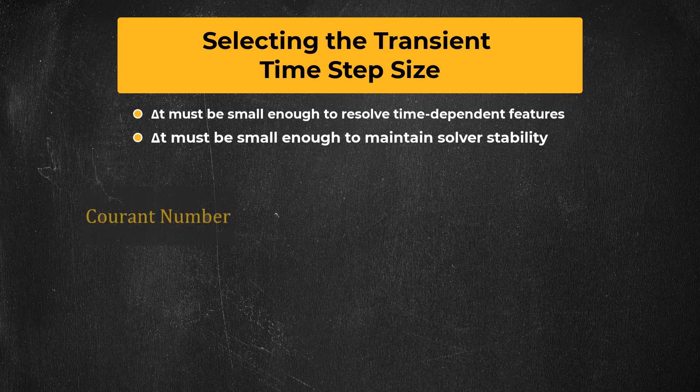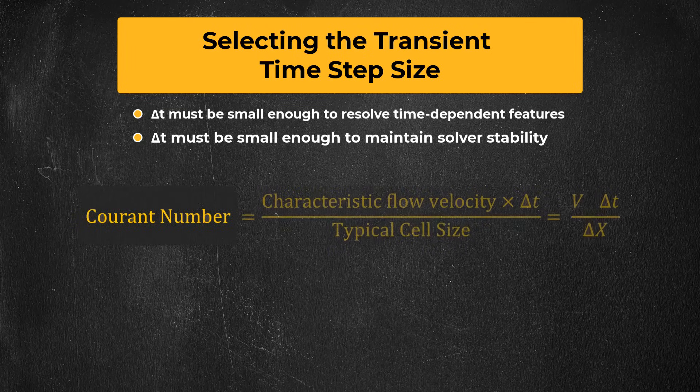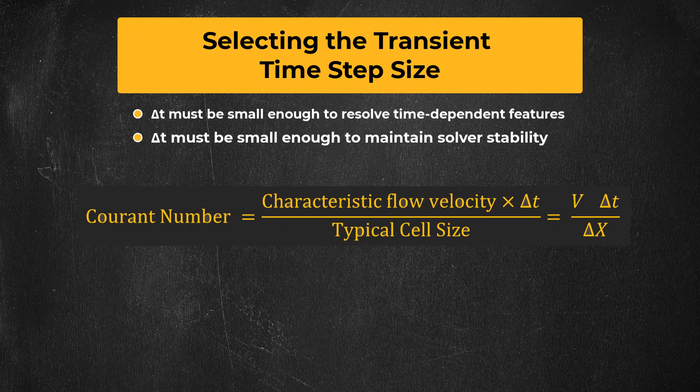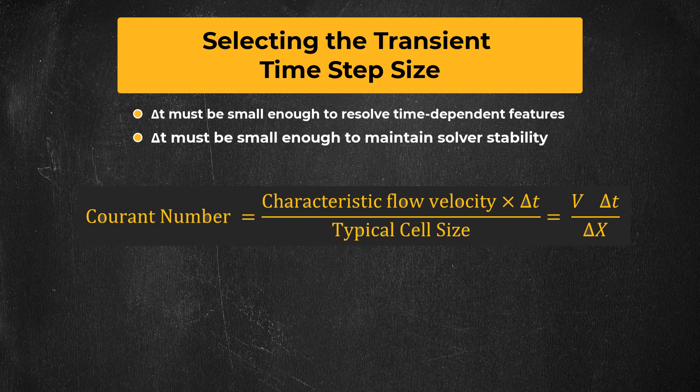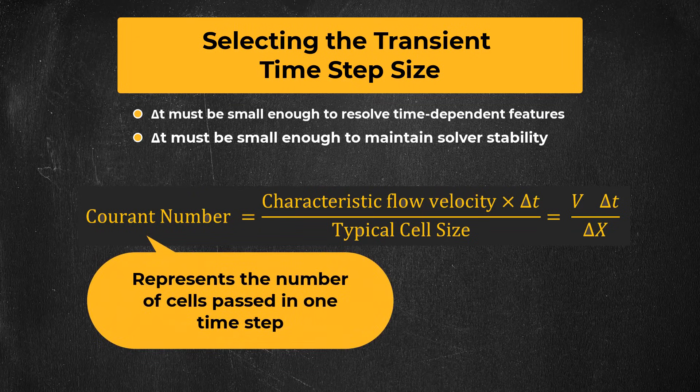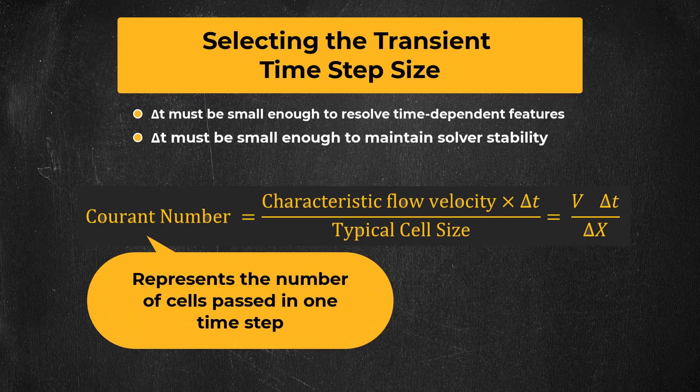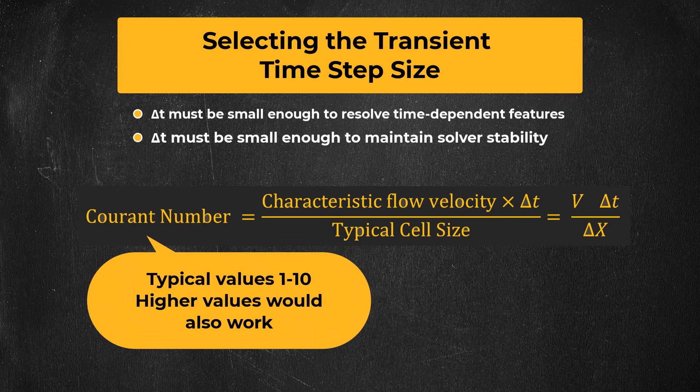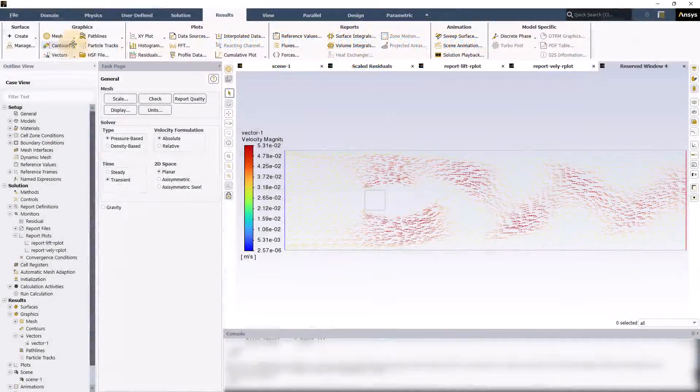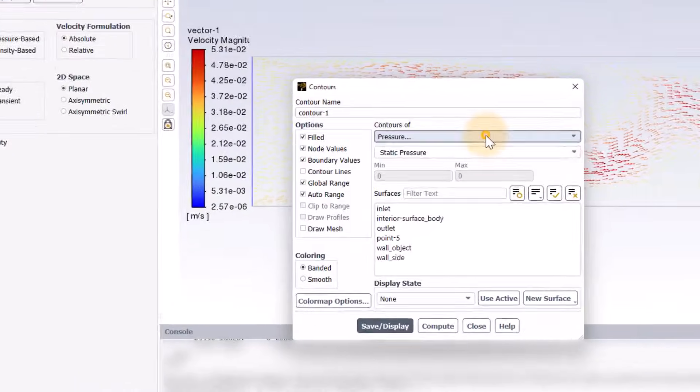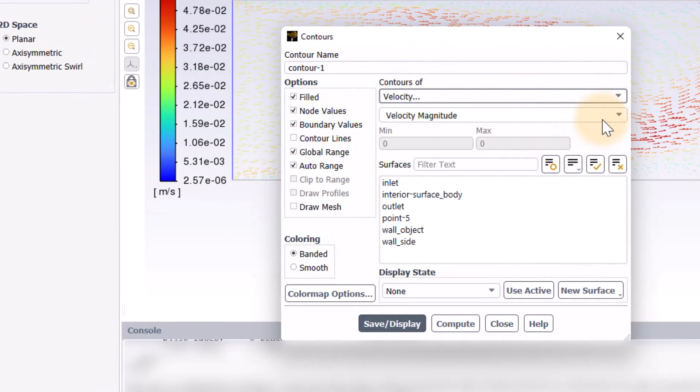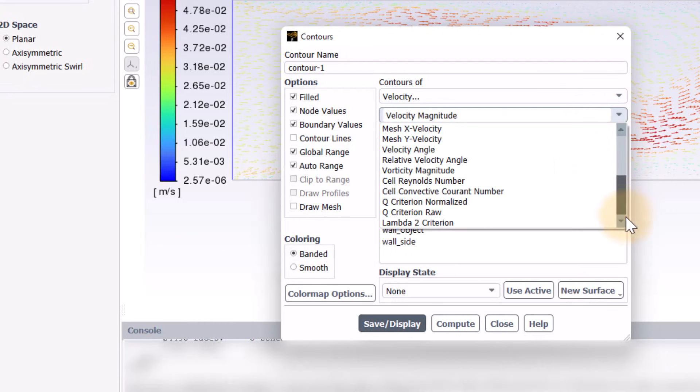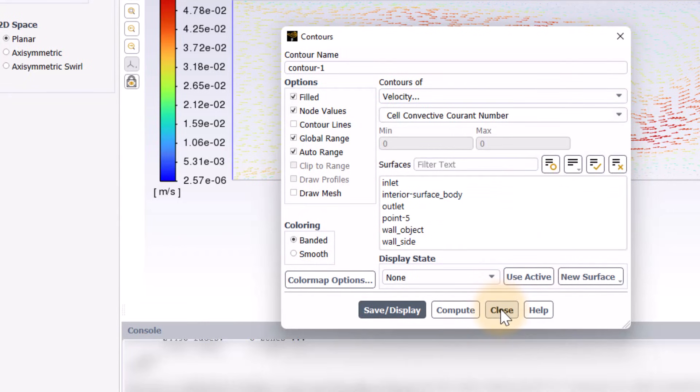The Courant number can be used to estimate the time step size. It is defined as the velocity multiplied by the time step divided by the grid spacing, and it represents the number of cells the flow passes through in a single time step. Typical values would be from 1 to 10, although in some cases higher values will work too. If you have a transient case in Fluent, you can check the Courant number. It is called cell convective Courant number, and can be found in the velocity group in any of the post-processing panels.